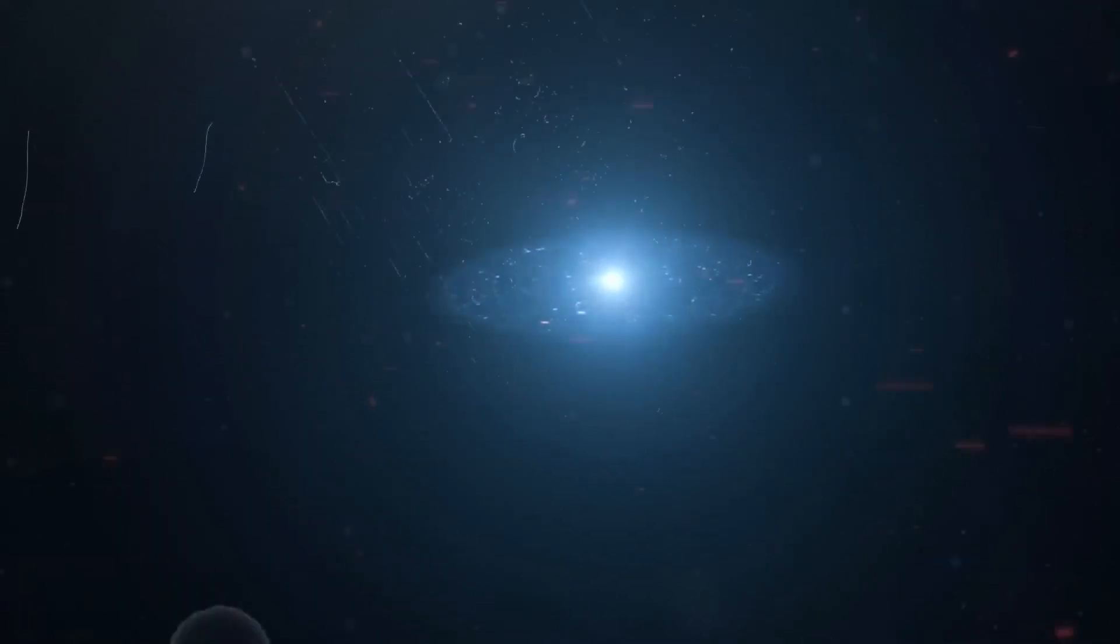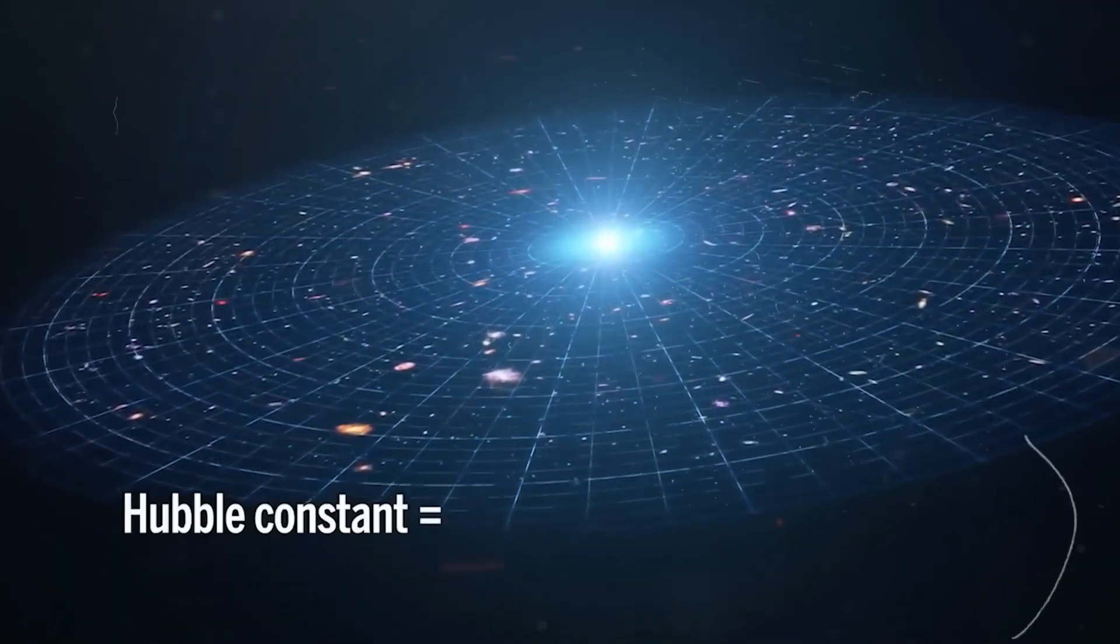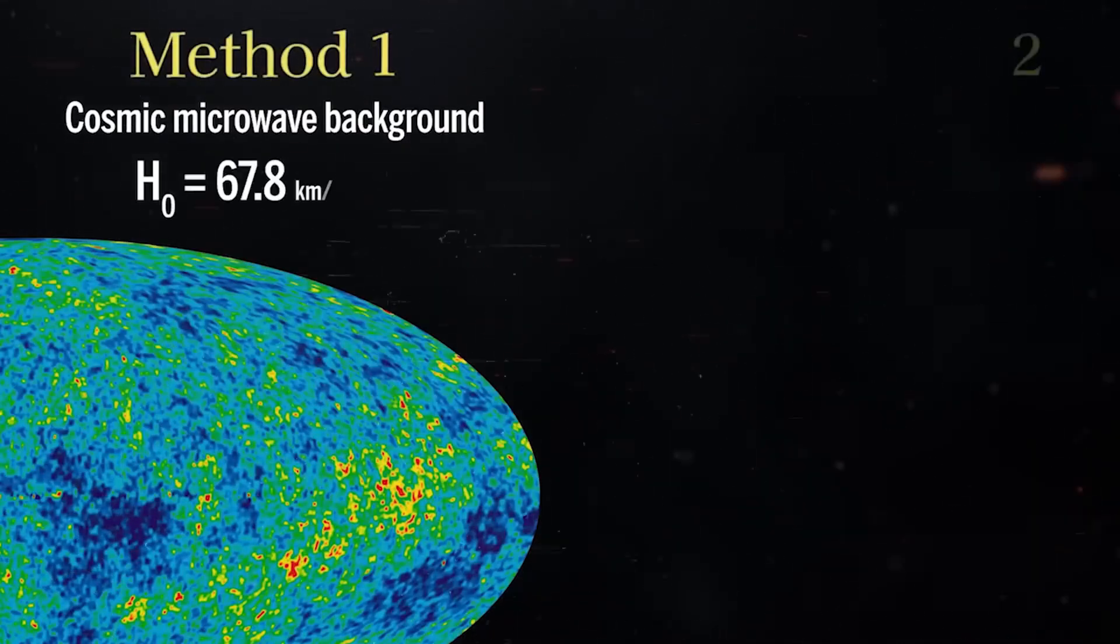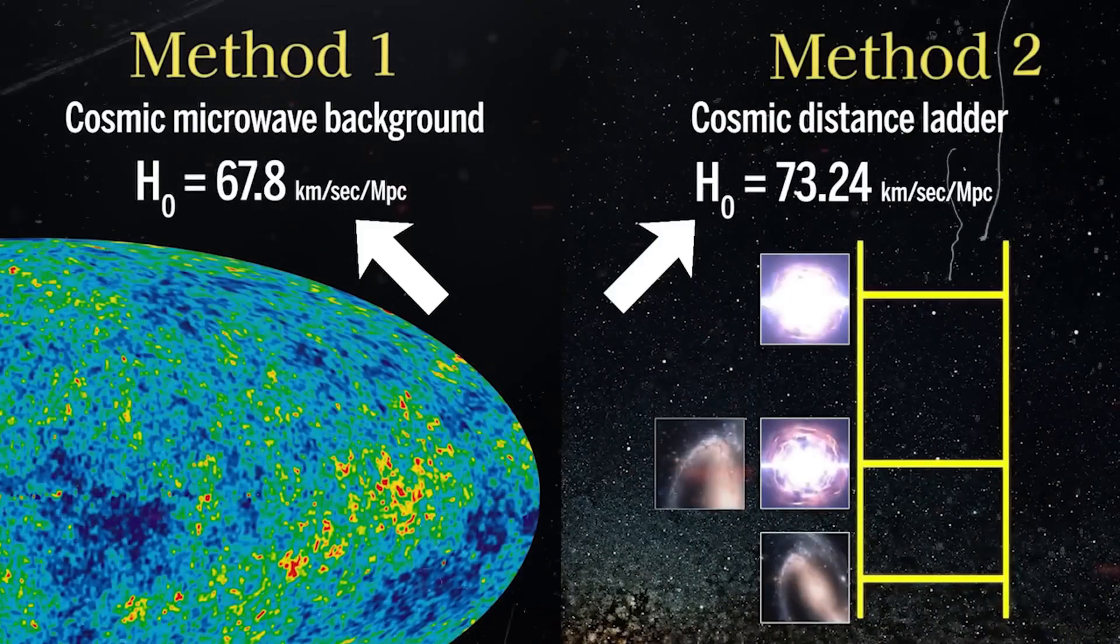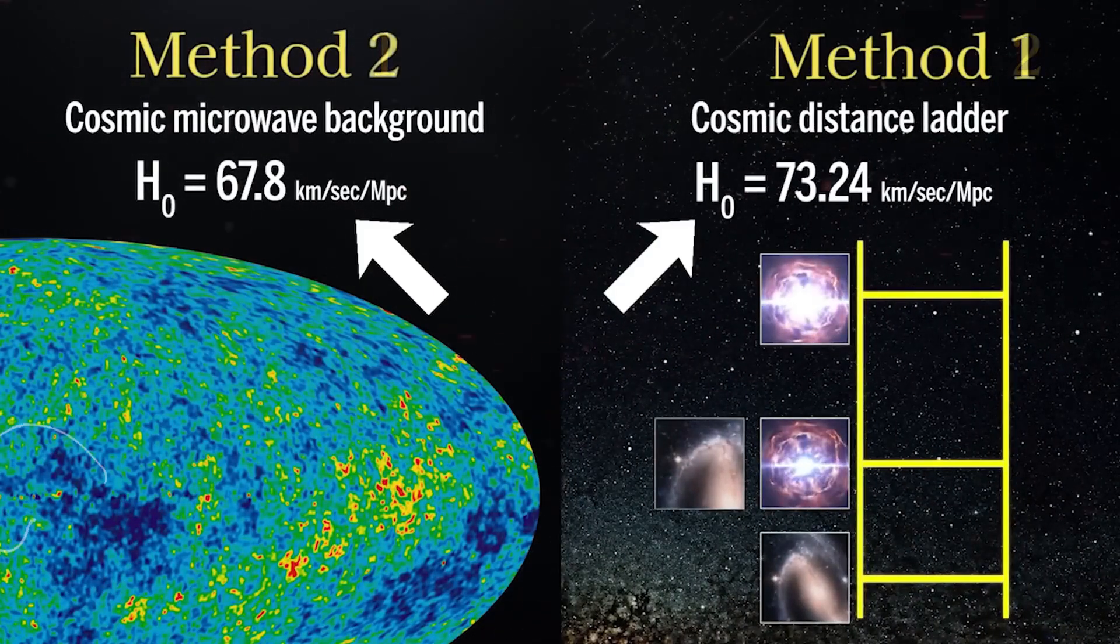The expansion rate of the universe is known as the Hubble constant. However, the discrepancy between the results obtained from the two methods of measurement is referred to as the Hubble tension.